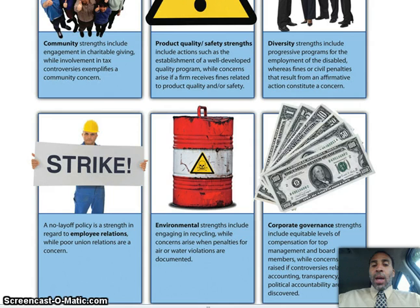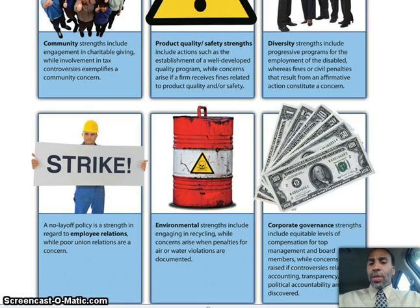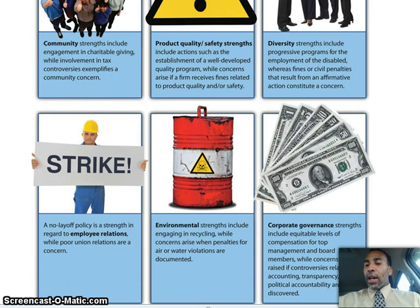A no-layoff policy is a strength in employee relations, while poor union relations are a concern — if a company has a no-layoff policy, employees feel pretty secure. Environmental strengths include engaging in recycling, while concerns arise when penalties for air or water violations are documented. Corporate governance strengths include equitable levels of compensation for top management and board members, while concerns are raised if controversies related to accounting, transparency, and political accountability are discovered.